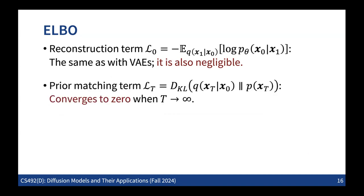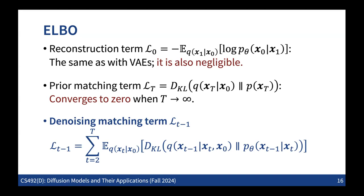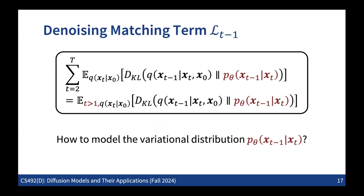The prior matching term converges to zero because there is nothing to optimize - we predefined the forward process. By our definition, adding noise in the forward process means this KL divergence naturally goes down to zero. So we only need to care about the denoising matching term, which is basically minimizing the KL divergence between two conditional distributions. This is the main focus for the DDPM loss function - an expected value of the KL divergence over X_T sampled from X_0, and also over the time step T.